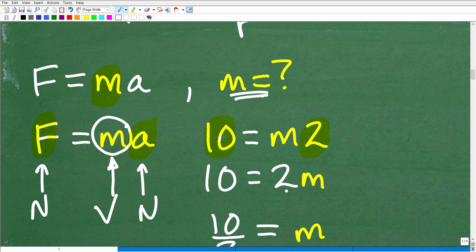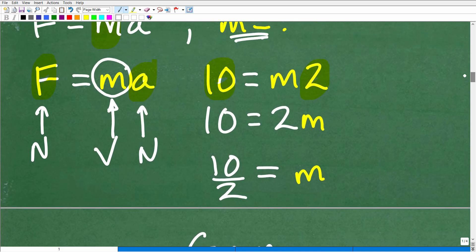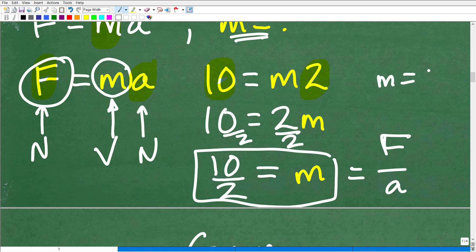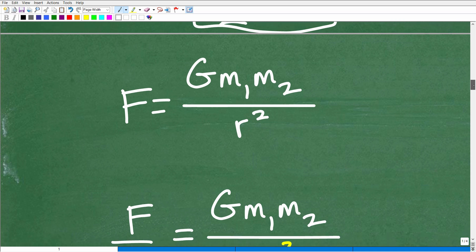So how would I solve for M given 10 is equal to M times 2? Now, M times 2 is the same thing as 2 times M. We're talking super basic algebra. So to solve for M, all I would have to do is divide both sides of the equation by 2. So M is equal to 10 divided by 2, and in this case, what was 10? 10 was force. And what was the 2? The 2 was representing the acceleration. So M is equal to F over A.